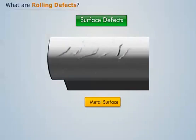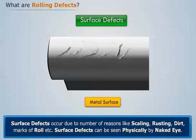Surface defects occur due to a number of reasons like scaling, rusting, dirt, and marks of roll. Surface defects can be seen physically by the naked eye.